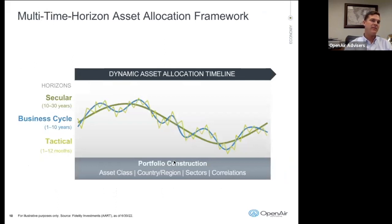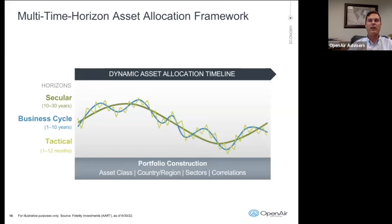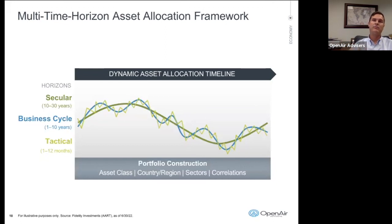We do make changes to our portfolios and asset allocations during different times of the market. Time horizons include secular — 10 to 30 years; business cycle — 1 to 10 years; and tactical — 1 to 12 months. The business cycle allocation is really measuring risk: are you moderate, aggressive, or conservative? Those tactical shifts are what we're looking at in the next 3, 6, or 12-month period — to reduce risk and losses during negative periods, or change the portfolio to take advantage of price appreciation like we did last year.